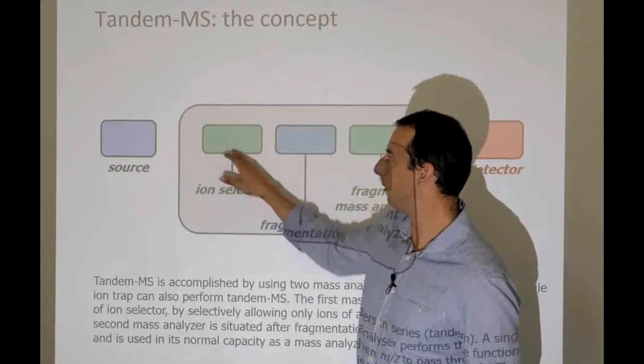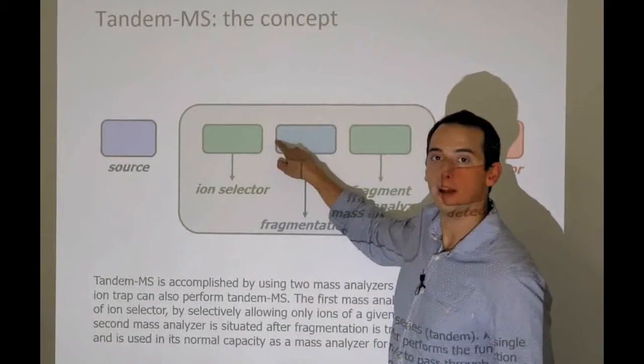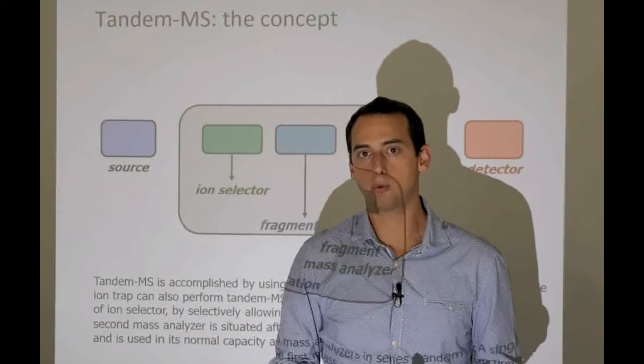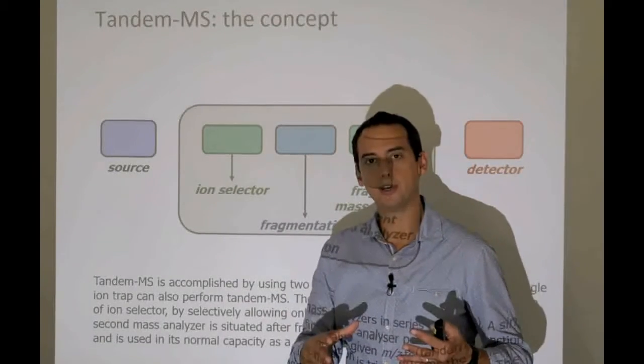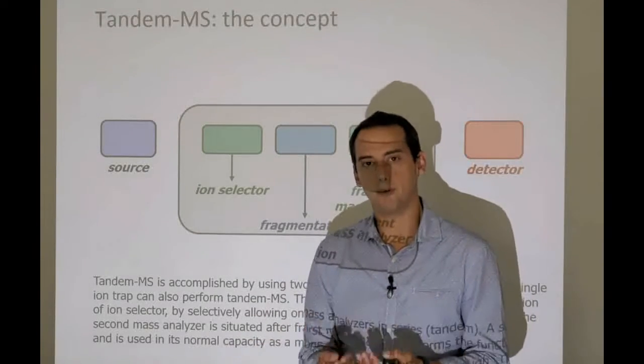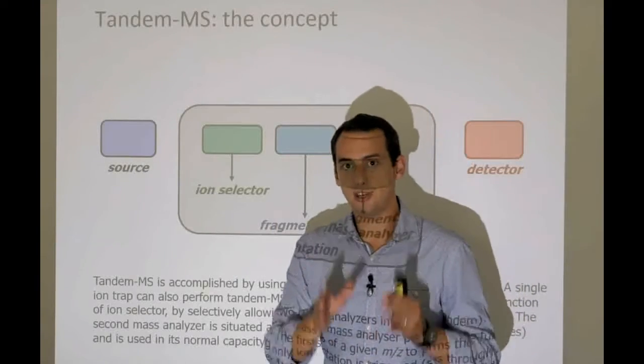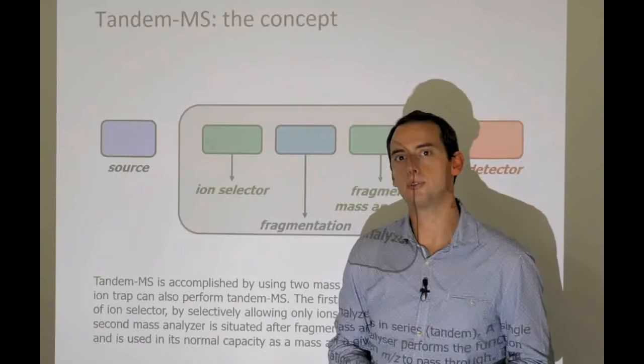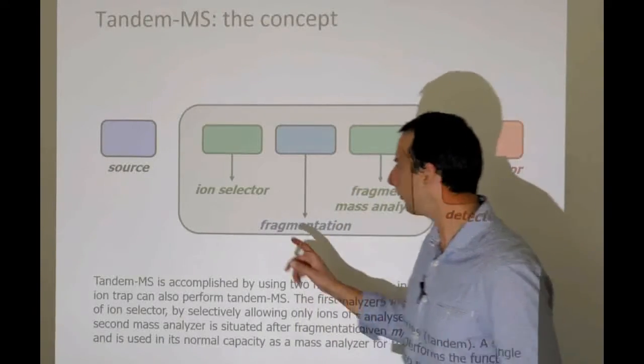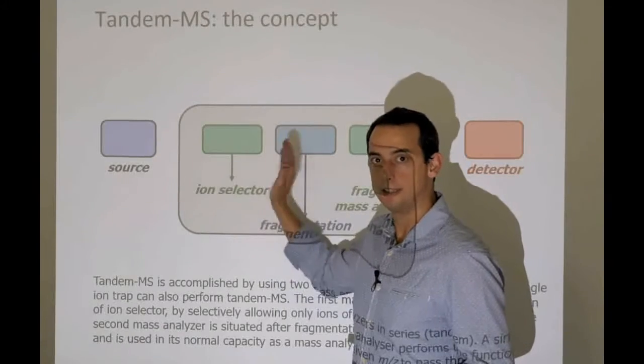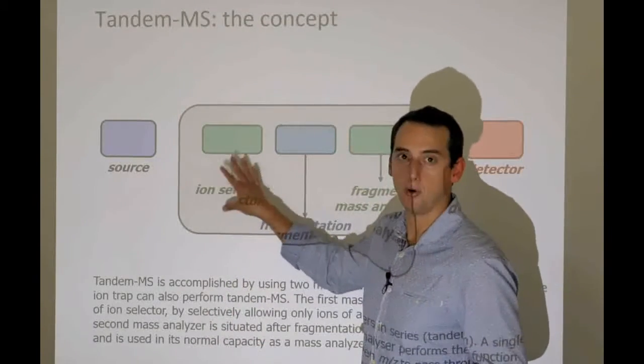You may remember when we talked about analyzers that there was one analyzer who was particularly well suited for this, and that is the quadrupole. The quadrupole throws every mass over charge out that does not fall within a very limited range, and only this mass over charge will have a stable trajectory. Another mass analyzer that can do this ion selection is an ion trap. Even a time of flight can be used by putting a gate at the end and only opening the gate at a given flight time.